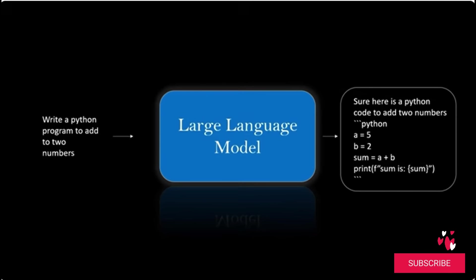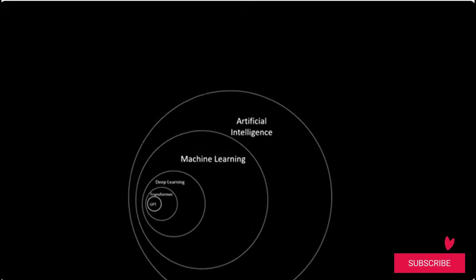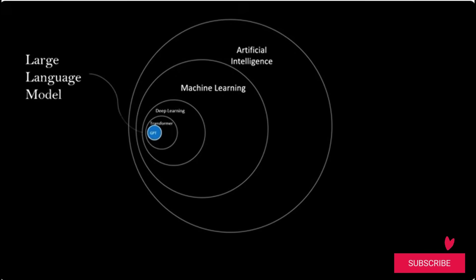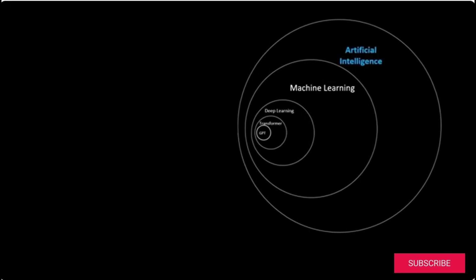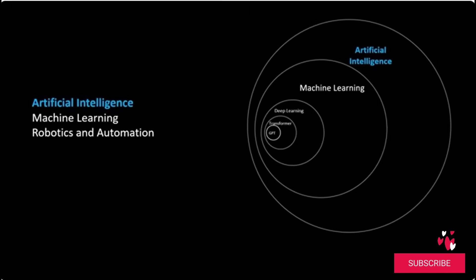But remember, AI is not just about LLMs — there are many other branches. AI is a broad umbrella term, and an LLM like GPT lies at a very deep level within it. AI includes many fields including machine learning, robotics and automation, expert systems, game-playing agents, and more.